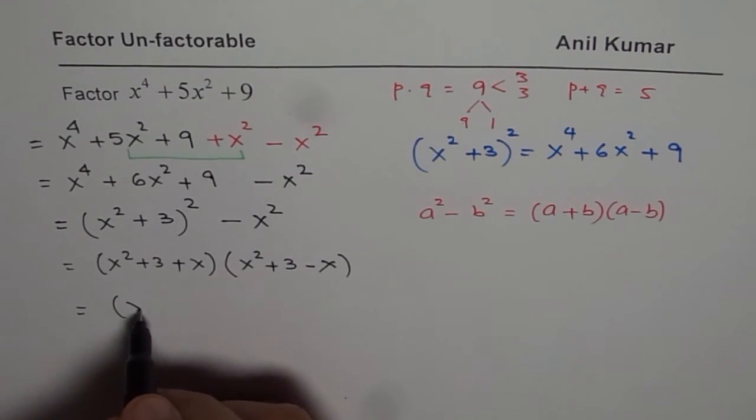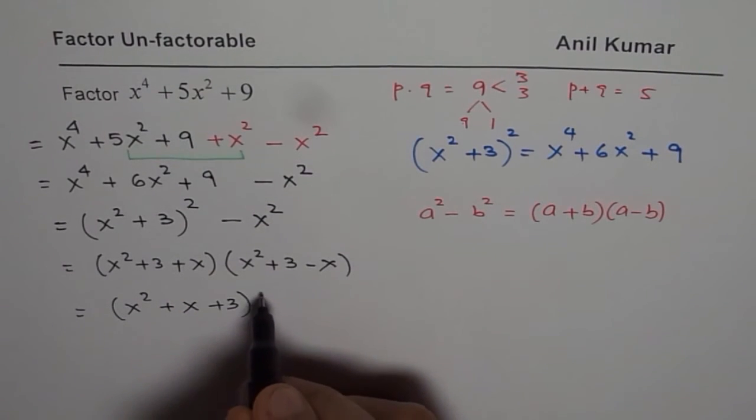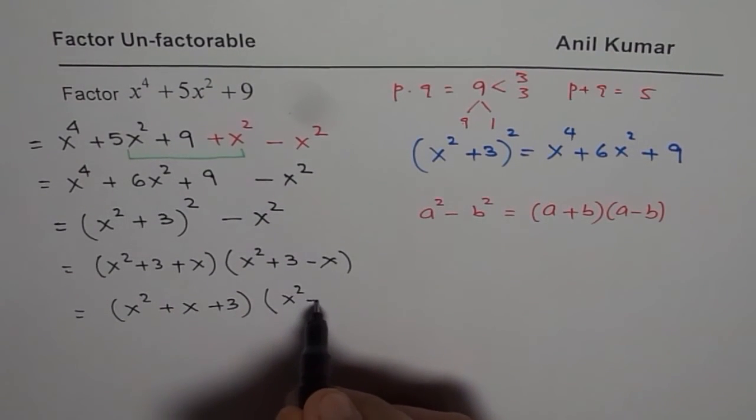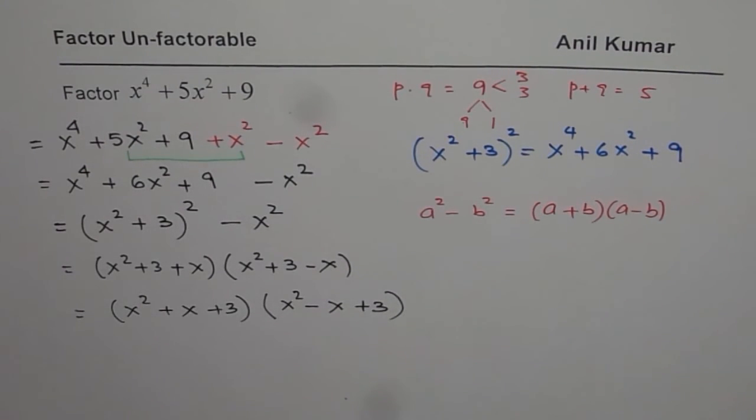Let me rearrange the terms. x squared plus x plus 3 times x squared minus x plus 3. So that is how you can factor such unfactorable trinomials. I hope you understand and appreciate it.